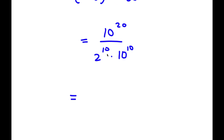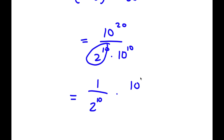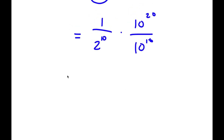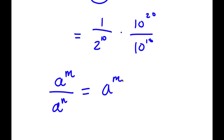From here, I can take out 2 to the power of 10 from my denominator and rewrite this as 1 over 2 to the power of 10, times all that's left: 10 to the power of 20 over 10 to the power of 10. Now, if I have something in the form a to the power of m over a to the power of n, this is simply equal to a to the power of m minus n.